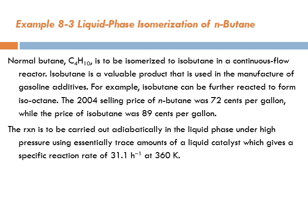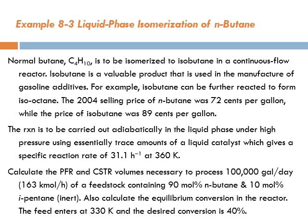The reaction is to be carried out adiabatically in the liquid phase under high pressure using essentially trace amounts of a liquid catalyst, which gives a specific reaction rate of 31.1 per hour at 360 Kelvin. Calculate the plug flow reactor and CSTR volumes necessary to process 163 kilomole per hour of a feedstock containing 90 mole percent n-butane and 10 mole percent isopentane. The feed enters at 330 Kelvin and the desired conversion is 40%.